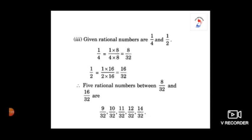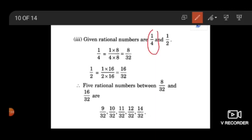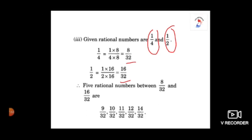Now, we will move on to the third subdivision. The given rational numbers are 1 by 4 and 1 by 2 — again, the same method. Here, I have taken the LCM as 32. So, I am multiplying 8 for 1 by 4, which gives me the result as 8 by 32. For the next rational number 1 by 2, I am multiplying with 16 to the numerator and denominator, which gives me the result as 16 by 32. To conclude, 5 rational numbers between 8 by 32 and 16 by 32 are: 9 by 32, 10 by 32, 11 by 32, 12 by 32, and 14 by 32.